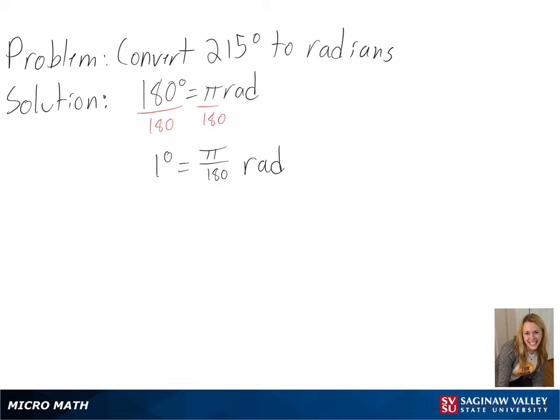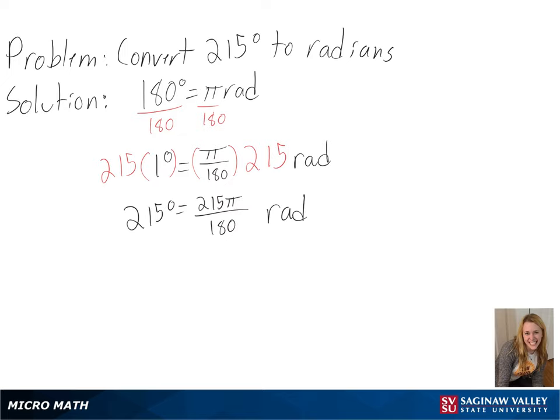And then we can multiply both sides by 215 to convert to 215 degrees. And after simplifying, we will get 43 pi over 36 radians as our final answer.